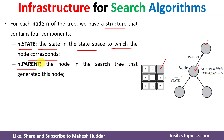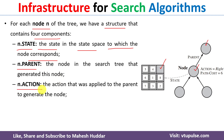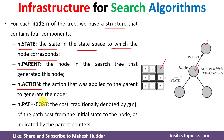The next component is n.action. To the parent we have applied some action so that we have generated the current node. That action is what n.action represents. The last component of this data structure is n.path_cost.